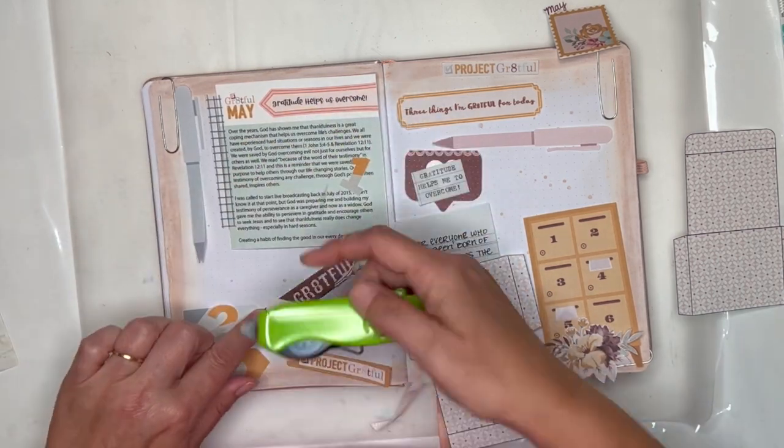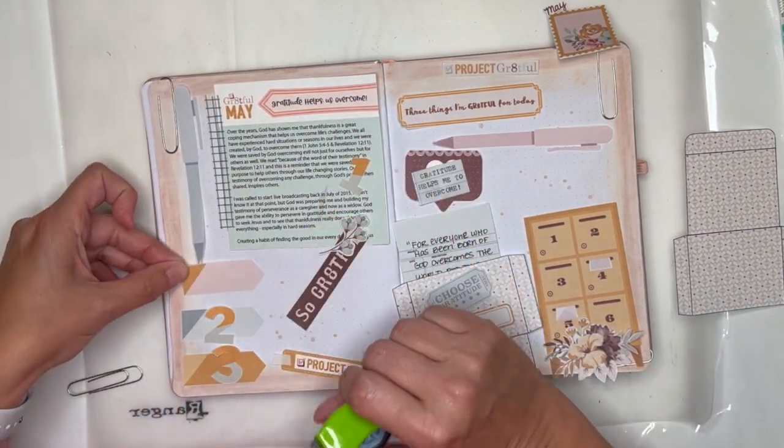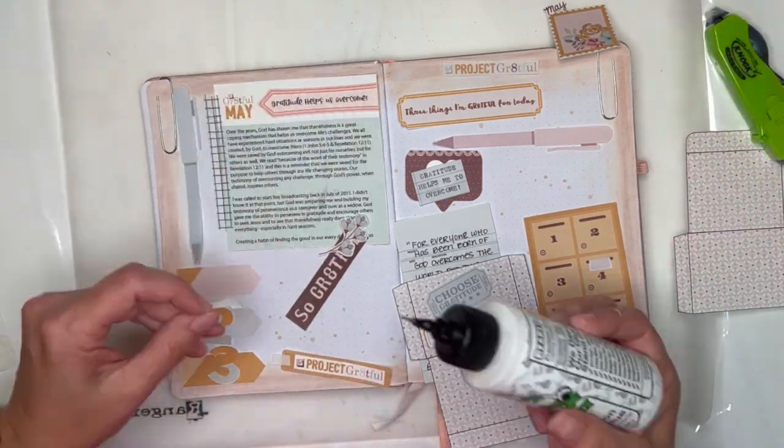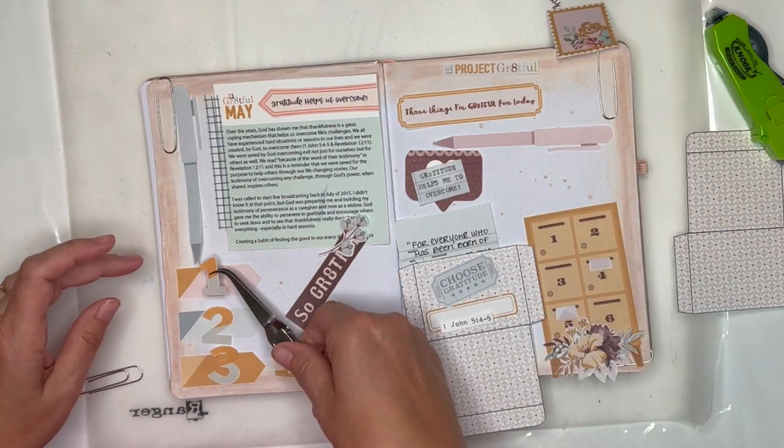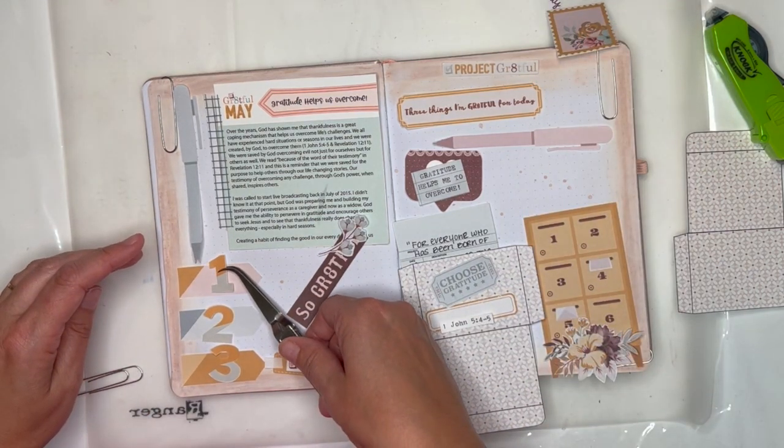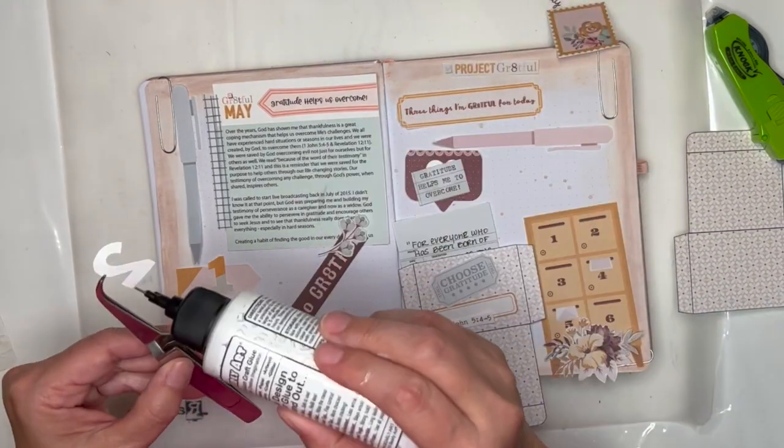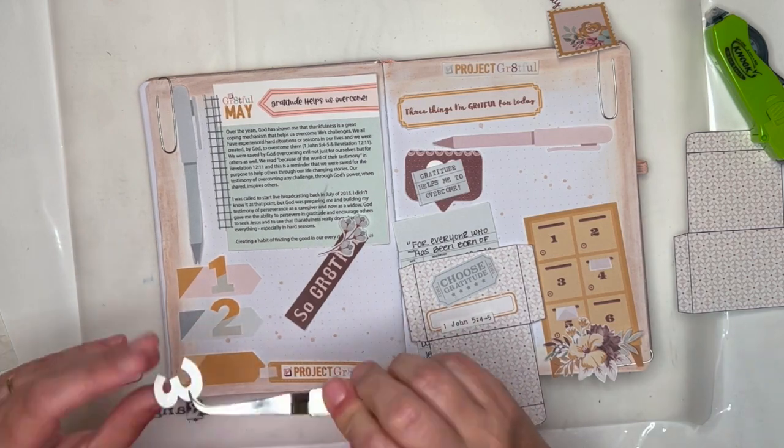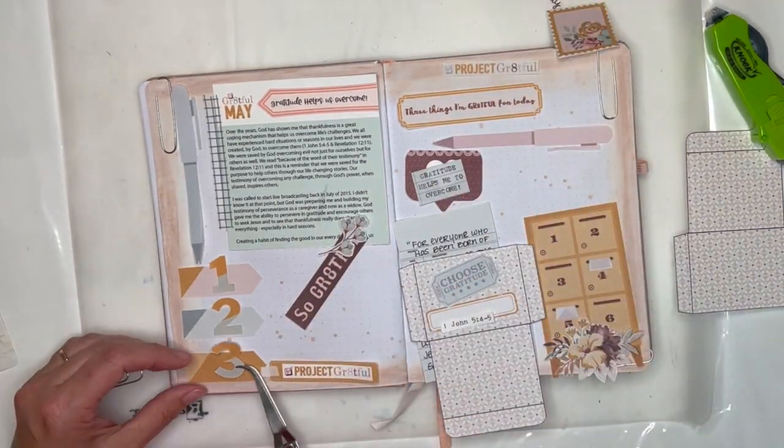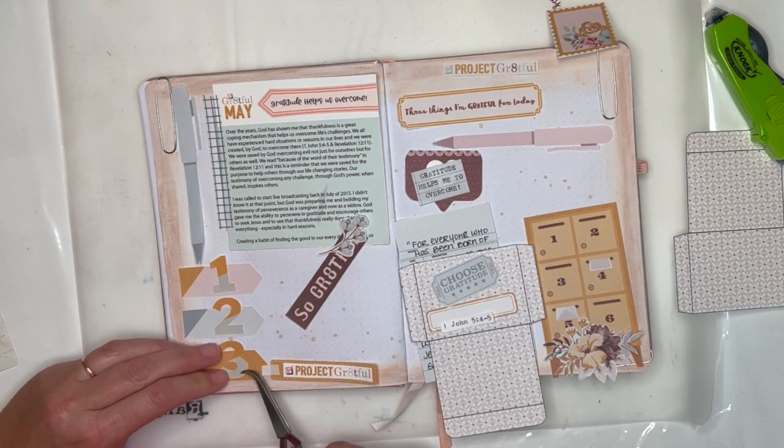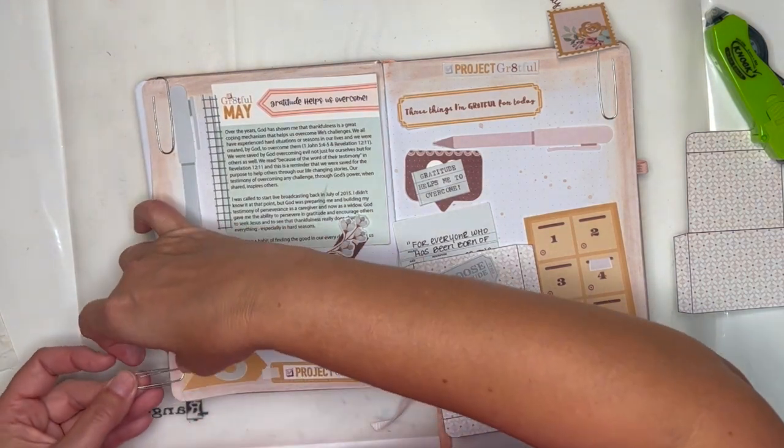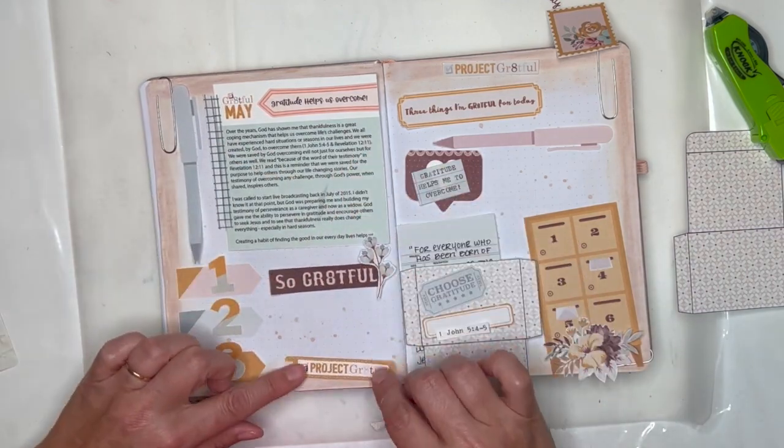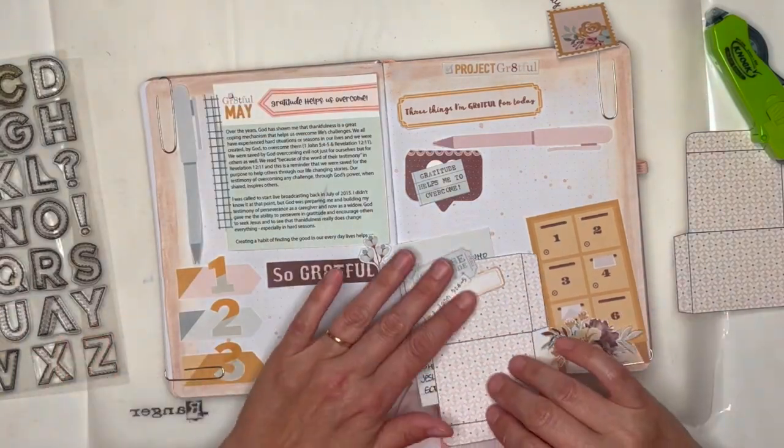I'm using bits and pieces from the ephemera set, from the journal bits, and the numbers set. There are three different sets that I'm using here. They are all coordinated for the month of May, and each month she releases a new set. Over on this left I am signifying that there are going to be three things that I'm grateful for.